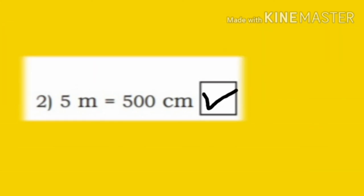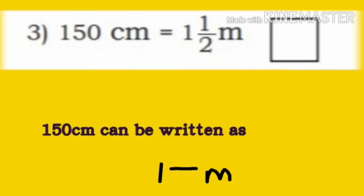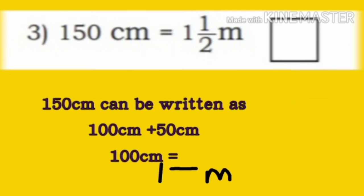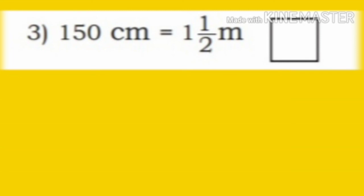Now, third one: 150 centimeter is equal to 1 and a half meter. 150 centimeter can be written as 100 centimeter plus 50 centimeter. 100 centimeter is equal to 1 meter, and 50 centimeter makes it 1 and a half meter. So, 150 centimeter is equal to 1 and a half meter. It is true.